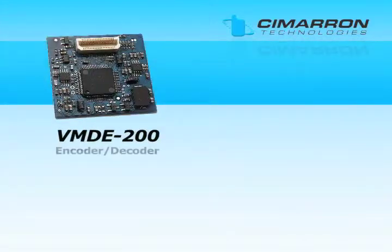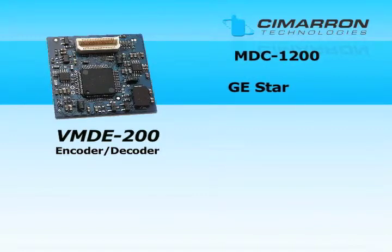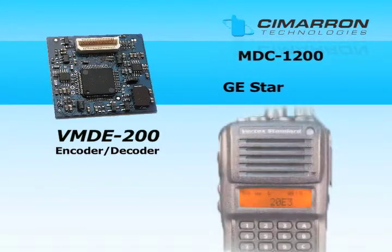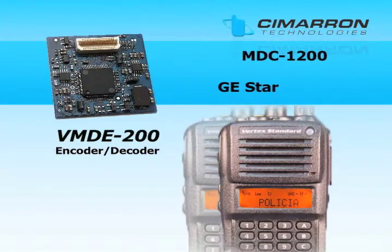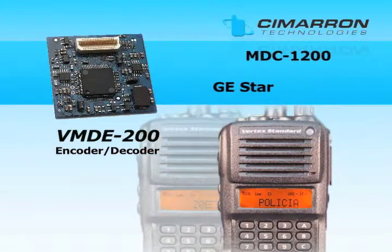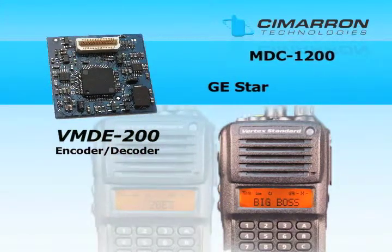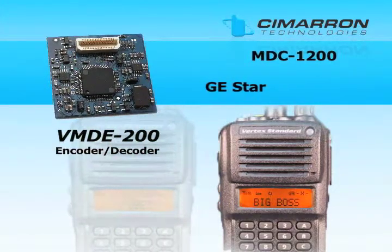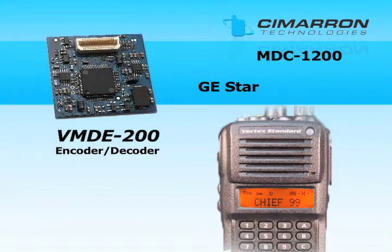The VMDE-200 is an MDC-1200 and GE-STAR encoder and decoder. On radio models with a display, the calling radio's PTT-ID can be shown on the display. You can also program an alias table to be shown on the radio display instead of the PTT-ID.